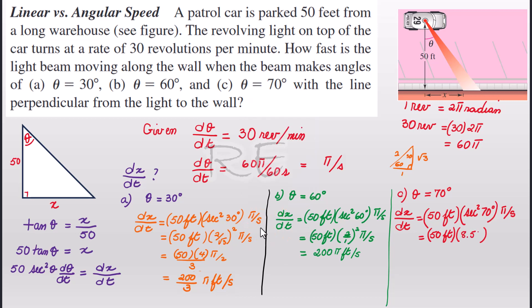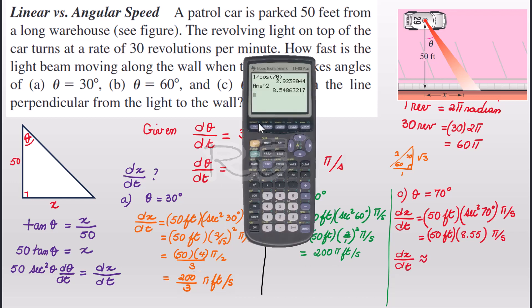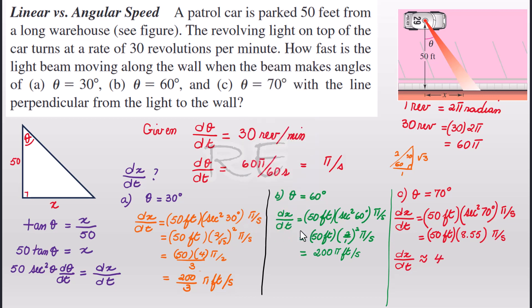50 feet times 8.55 π radians per second. So dx/dt for θ equal to 70 degrees will be approximately, let's multiply 8.55 by 50. So it's approximately 427.7 π feet per second.